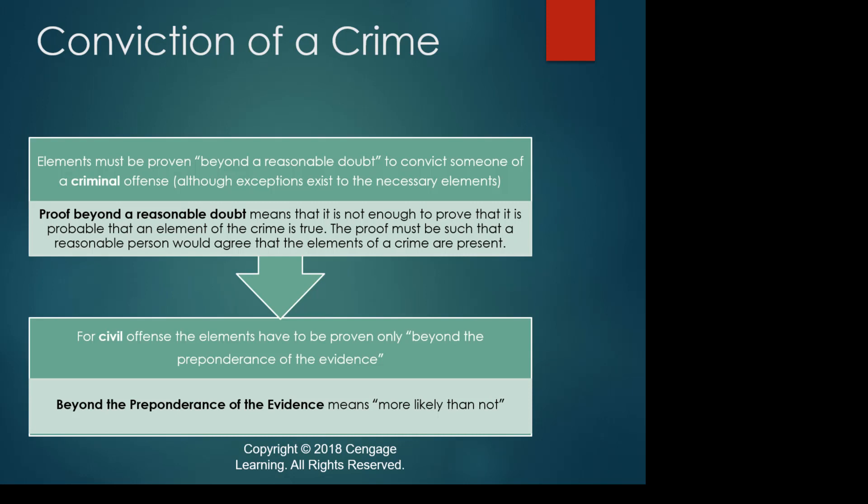When we talk about the elements of crime, let's take a simple crime like burglary in North Carolina. North Carolina will say, depending upon the degree of burglary, that you broke and entered — those are two separate things — into a residence or a dwelling home. You'll notice that each one of those is a separate element.